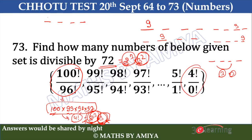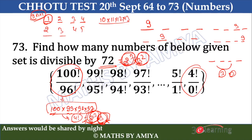Checking which starting numbers work: starting at 1 (1,2,3,4) gives only one factor of 3 — not enough. Starting at 3 (3,4,5,6) gives 3 and 6 — two multiples of 3, so product divisible by 9. Starting at 4 (4,5,6,7) — only one multiple of 3 — not permissible. Starting at 6 (6,7,8,9) — gives 6 and 9 — permissible. So we need the starting number's remainder when divided by 9 to be 3, 6, 7, 8, or 0 (i.e., 9 itself).